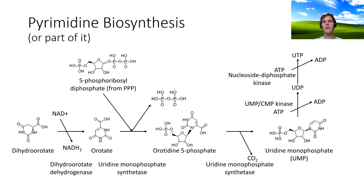The same enzyme, uridine monophosphate synthetase, converts orotidine 5-phosphate into uridine monophosphate with the loss of a CO2 molecule. UMP gets further phosphorylated by ATP through the enzyme UMP/CMP kinase to UDP, which is then phosphorylated further by nucleoside diphosphate kinase, again at the expense of ATP, to become UTP.